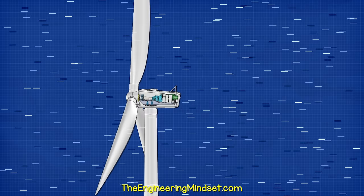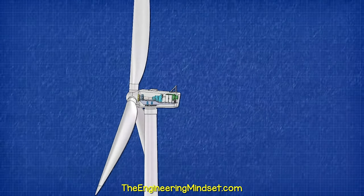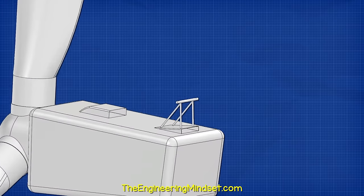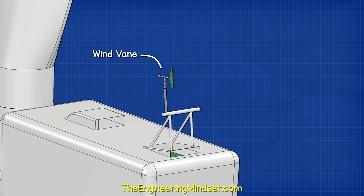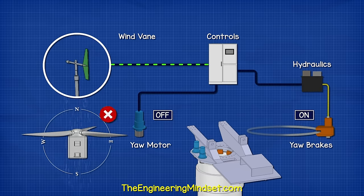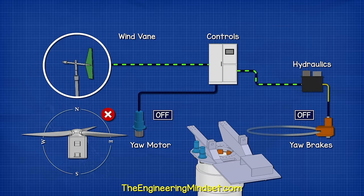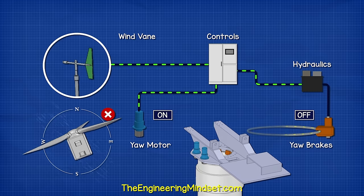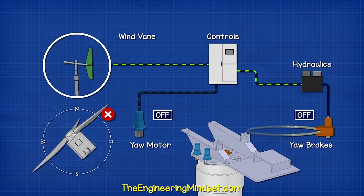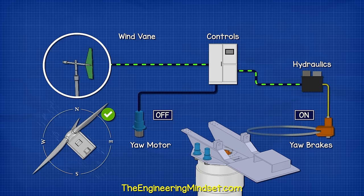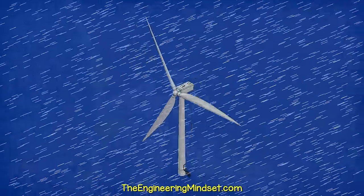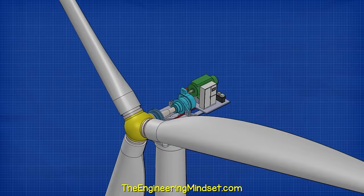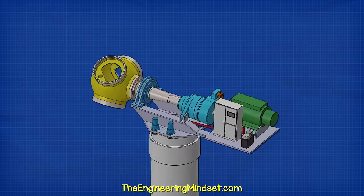The bed plate and all the main components are covered with a fiberglass housing, forming the nacelle. The case protects the components from wind, sun, rain, etc. On the top of the nacelle we find a wind vane to determine wind direction and an anemometer to measure wind speed. The wind vane determines the wind direction and the controller releases the brakes, allowing the motors to turn the nacelle to align it with the wind. Once aligned, the brakes are reapplied. The wind flows over the blades forcing them to rotate, which rotates the hub and rotates the shaft.